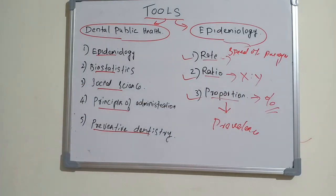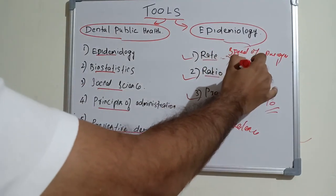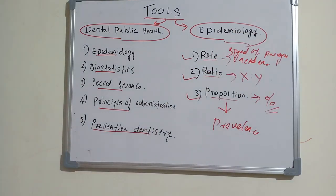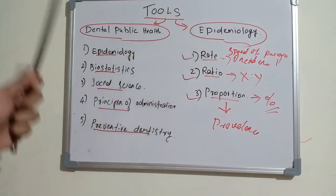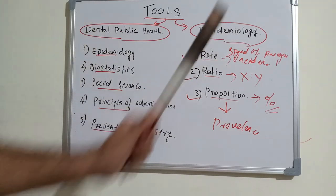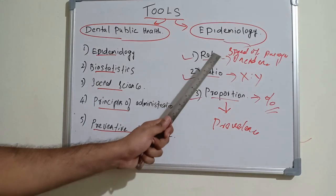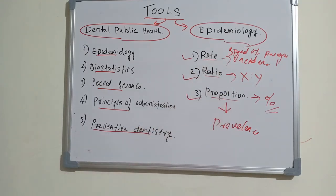An example of rate is incidence — we have covered cumulative incidence, incidence proportion, and incidence density in detail. My goal is to give you a clear idea so you never get confused while writing your exam. Always remember: epidemiology is one tool of dental public health, and epidemiology itself has three tools — rate, ratio, and proportion. I'll come up with a new revision topic in dentistry. Thank you.